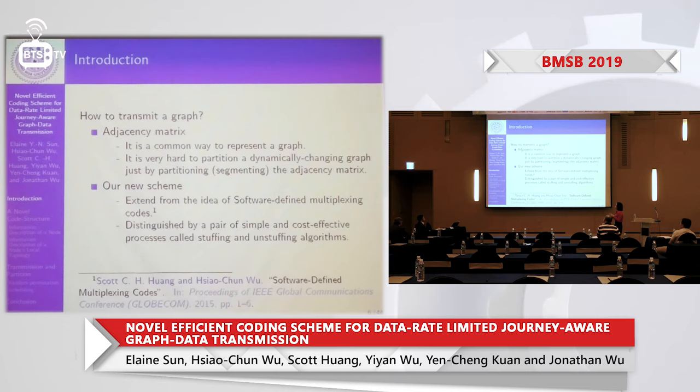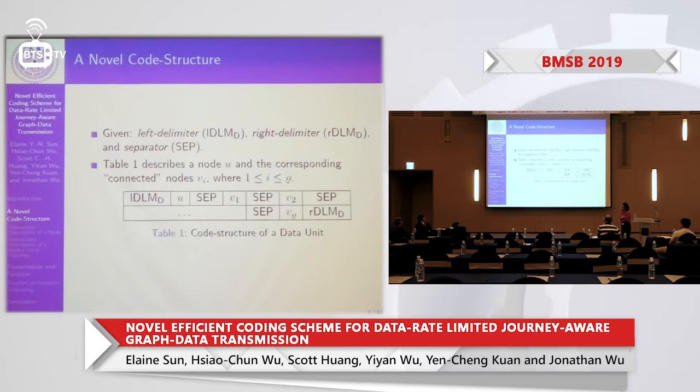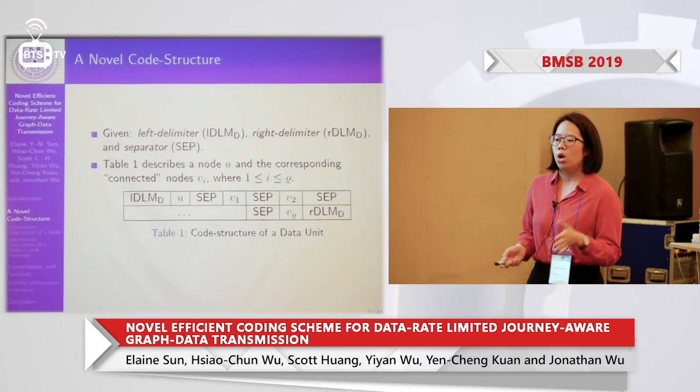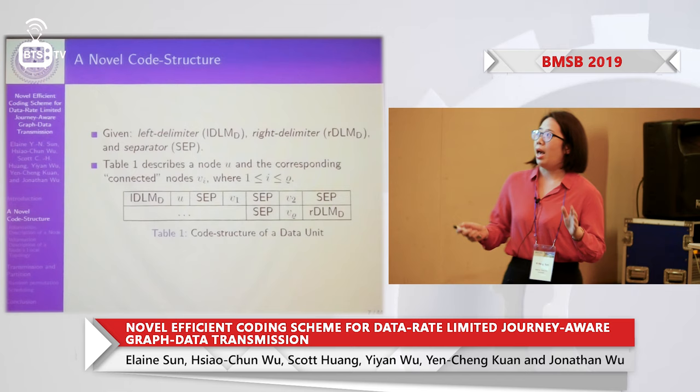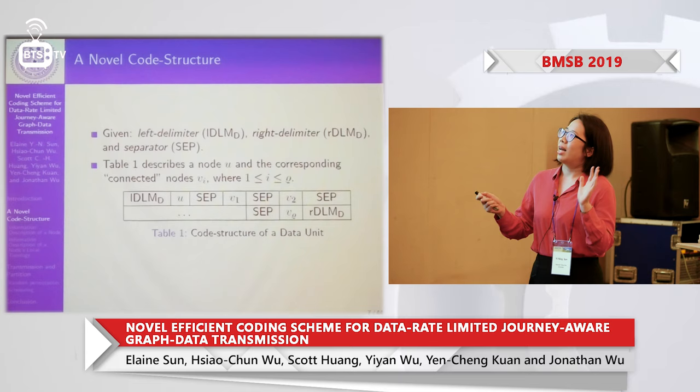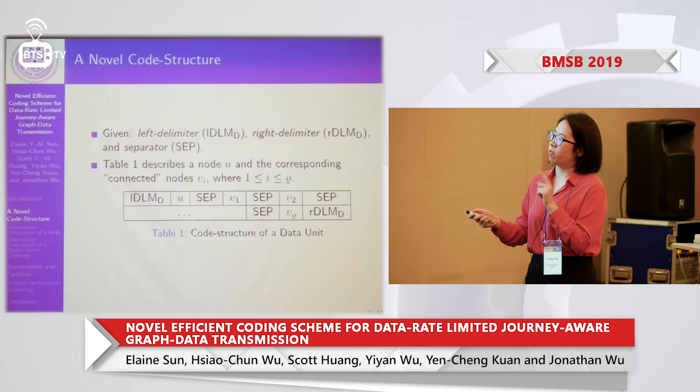So we create a new scheme — we call it our new scheme. This new scheme is extended from the software-defined multiplexing code; if you are interested, you may find that paper published in 2015. In our new scheme's code structure, we need to give a left diameter and right diameter to construct our data unit. Each node will have its own data unit, and the corresponding connected nodes are recorded in this structure.